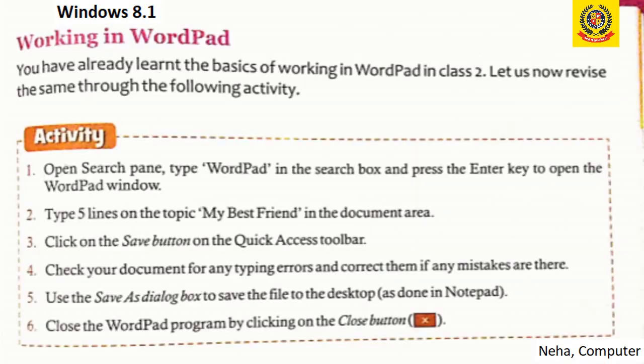Now let's do an activity in WordPad. We have to type five lines on the topic 'My Best Friend.' To move to the next line when we finish a line, we press the Enter key. After finishing writing about my best friend, we have to save it. A Save As dialog box will come — mention the file name and click the Save button. When our work is done, click the Close button.